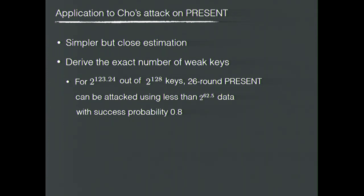We also apply our results to a previous attack on the PRESENT block cipher. Compared with the previous results, there are two benefits. First, we can obtain a close estimation of the average capacity as in the previous paper, but using a much simpler approach.